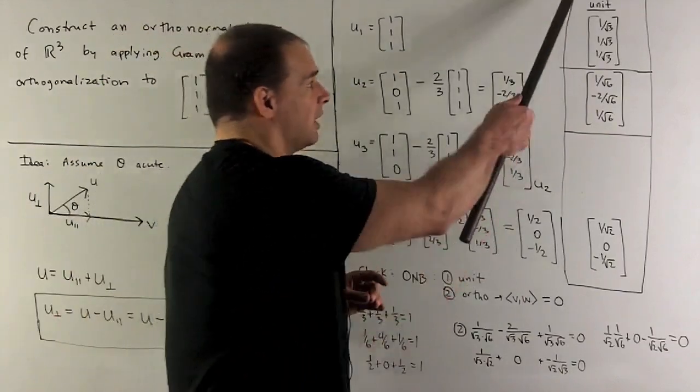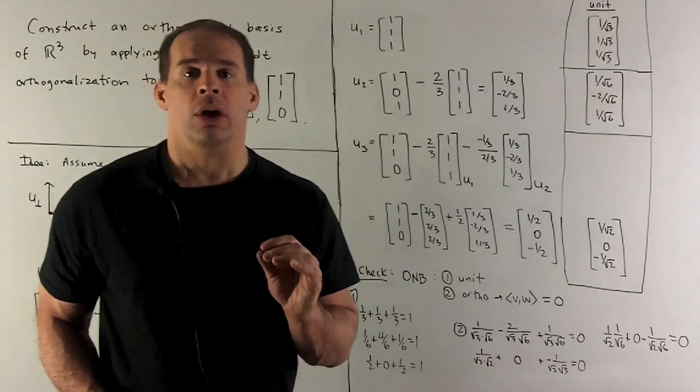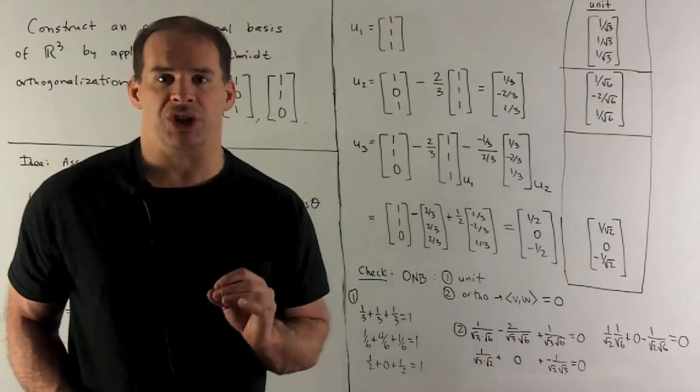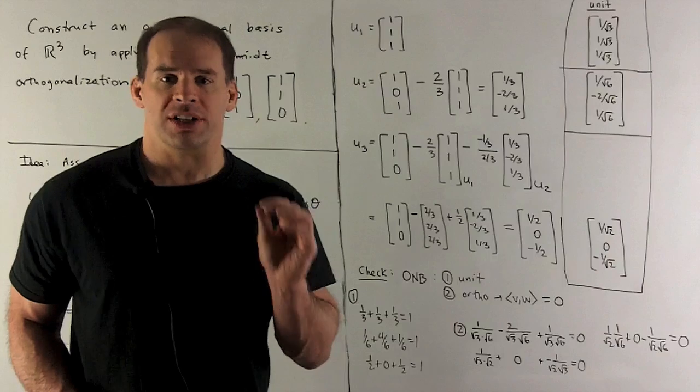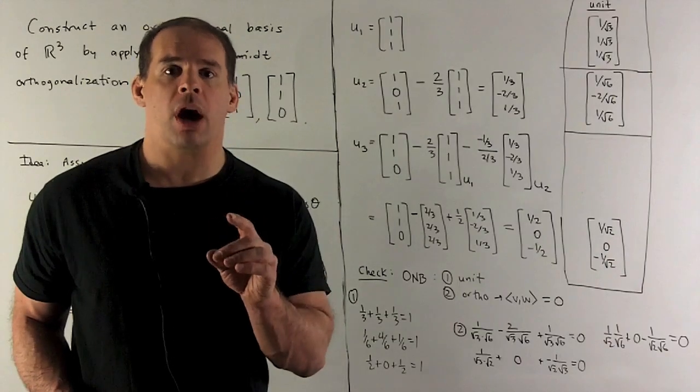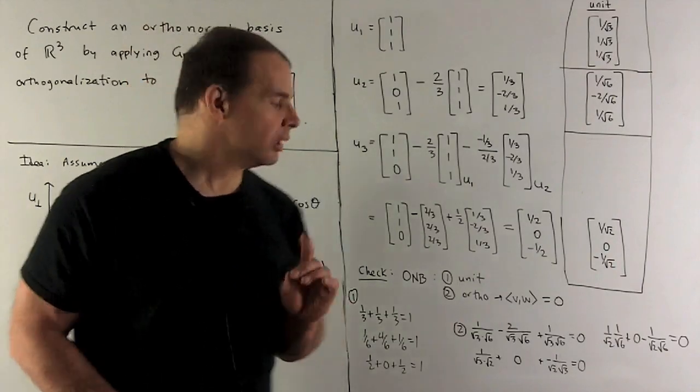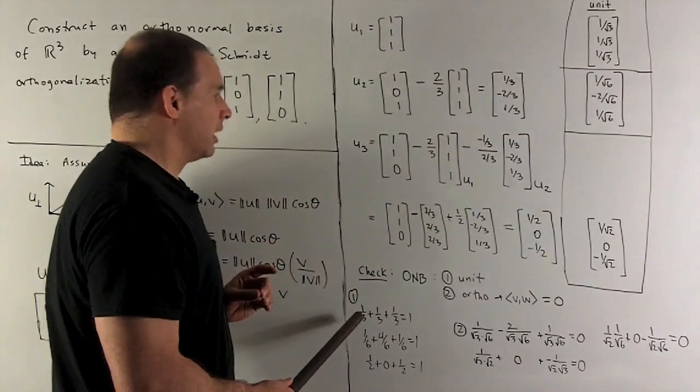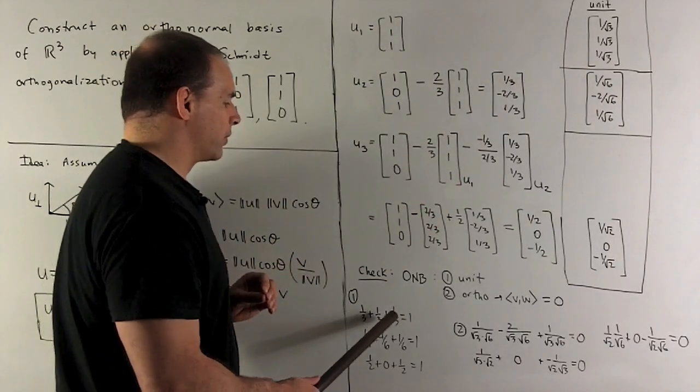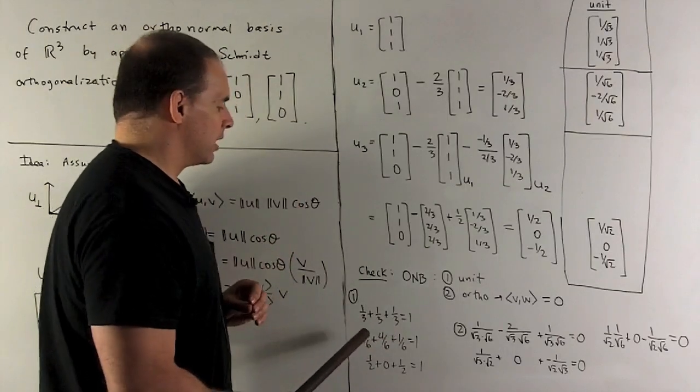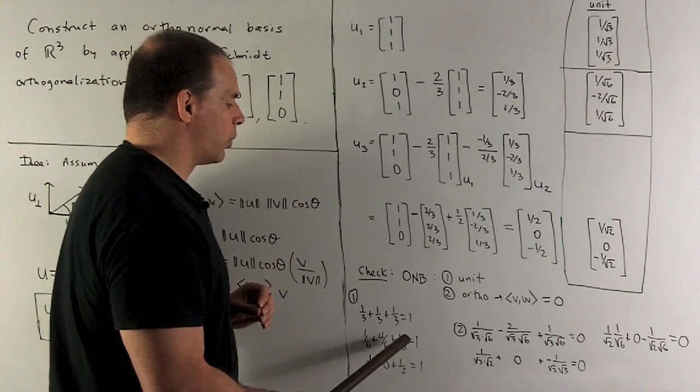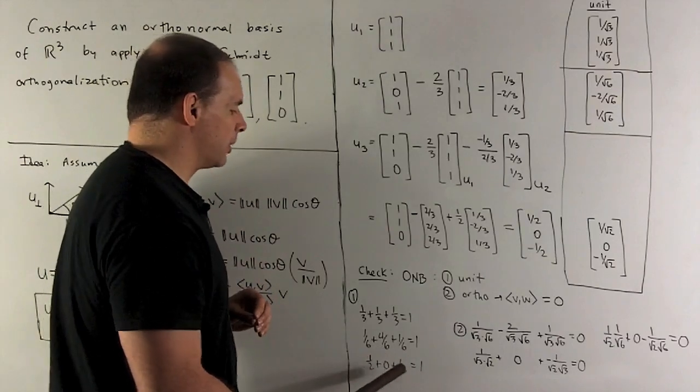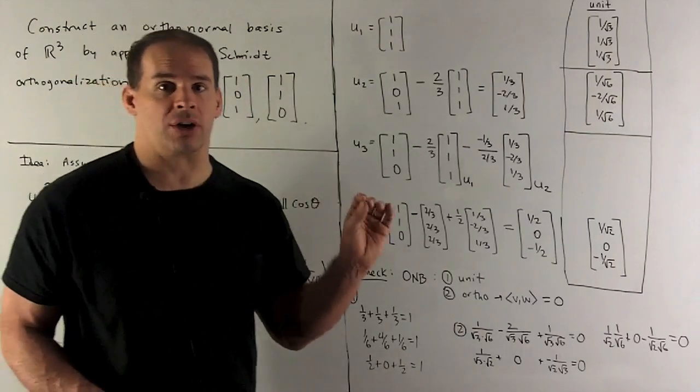Now, this gives me an orthonormal basis. Of course, we want to check that. So we need to check six equations. Three of them are going to say, this is for the normal part, are the vectors unit vectors. Well, if we take some of the squares of the entries, first one we get a 1/3 plus 1/3 plus 1/3 gives me a 1. Second one gives me 1/6 plus 4/6 plus 1/6 gives me a 1. Then for the last one, I get 1/2 plus zero plus 1/2 gives me a 1. So they're all unit vectors.